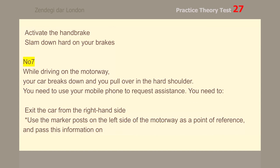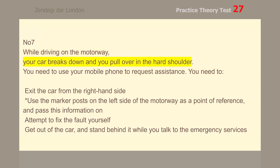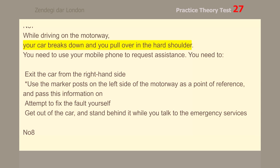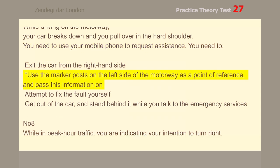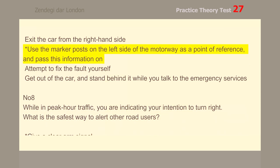Number 7. While driving on the motorway, your car breaks down and you pull over in the hard shoulder. You need to use your mobile phone to request assistance. Use the marker posts on the left side of the motorway as a point of reference, and pass this information on.